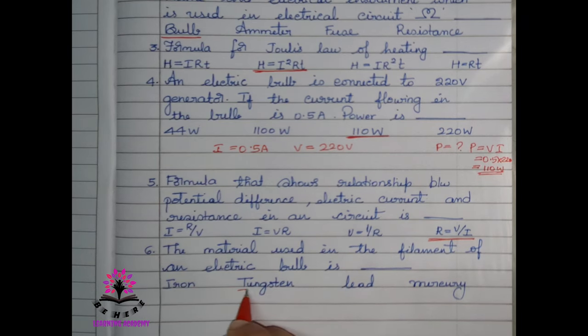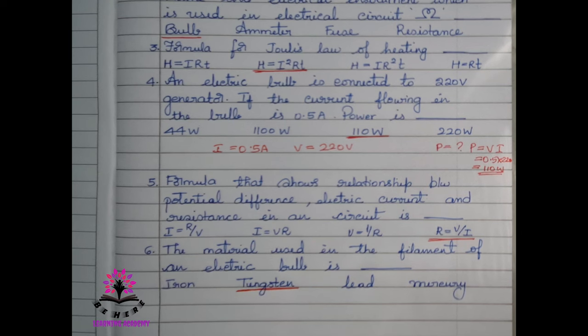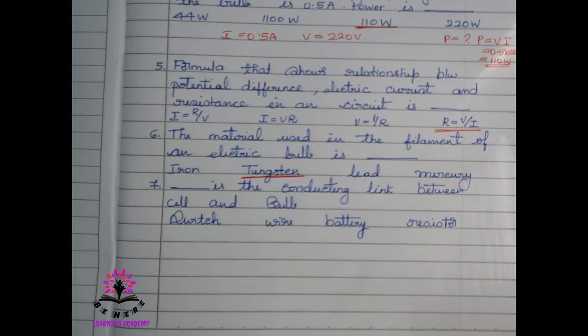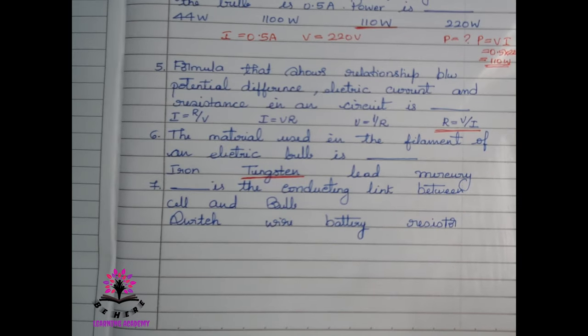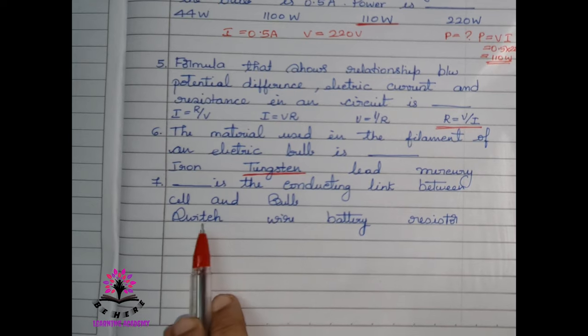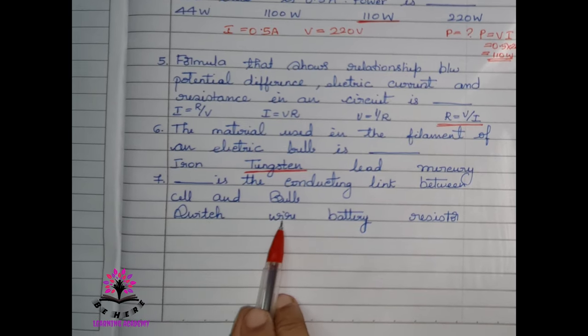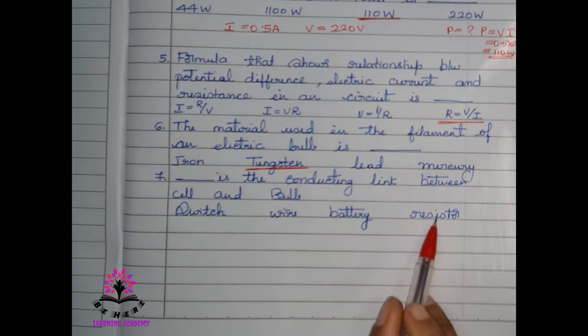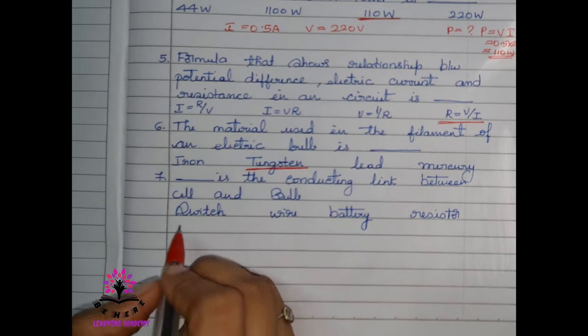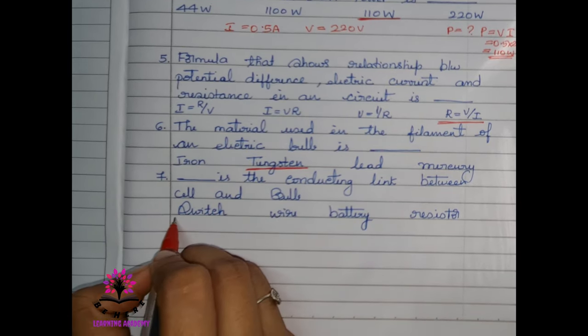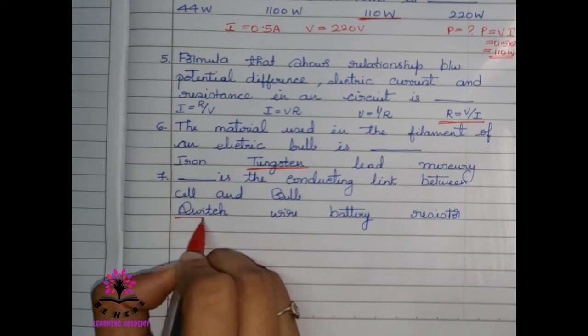Next question: the material used in the filament of an electric bulb is iron, tungsten, lead, or mercury. The right answer is tungsten. Dash is the conducting link between cell and bulb — options: switch, wire, battery, resistor. The answer is switch.